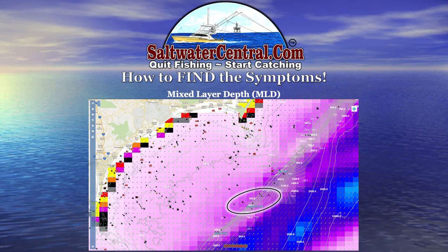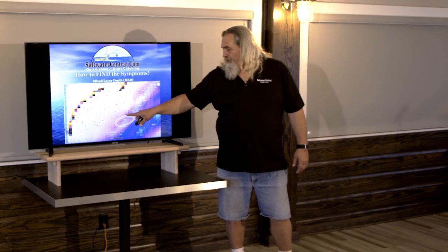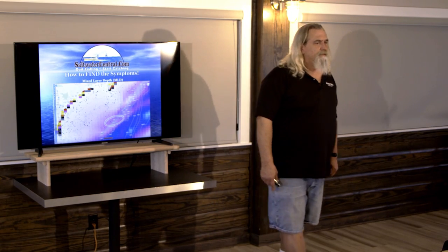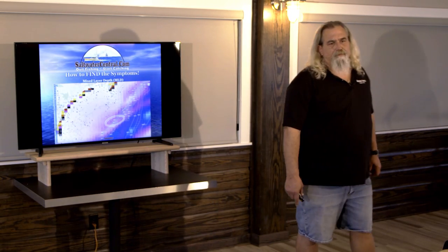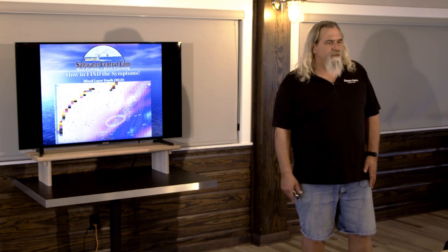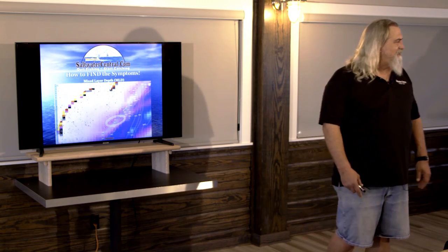One of the problems with mixed layer depth is it's a fairly coarse data set — probably three to four nautical miles across each pixel. Unfortunately, I can't get it any tighter than that, but it is what it is. On to Tricks of the Trade.